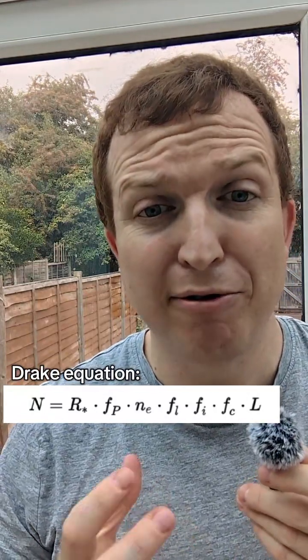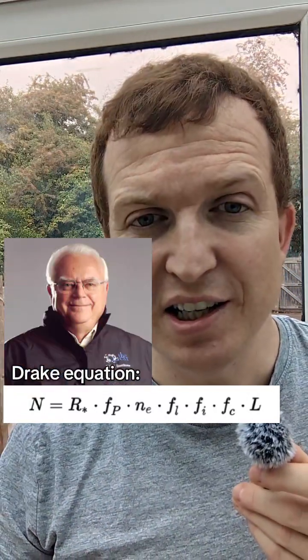This equation was formulated by a man called Frank Drake in the 1960s and told us about the probability of alien life existing and just how many there should be in our galaxy.